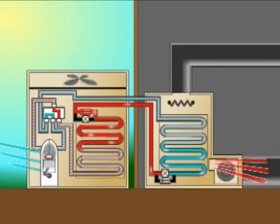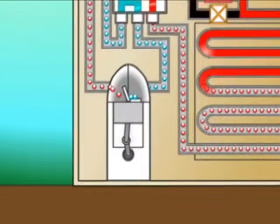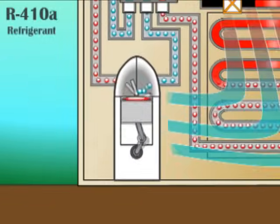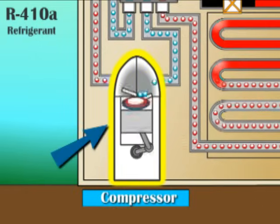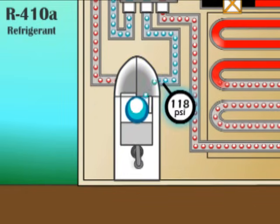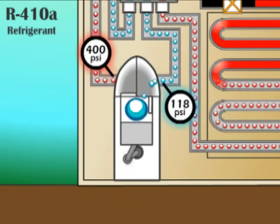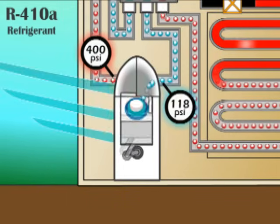In the summer, the compressor — the heart of the heat pump — receives cool, low-pressure refrigerant vapor. It then pumps this vapor into the high-pressure side of the system.